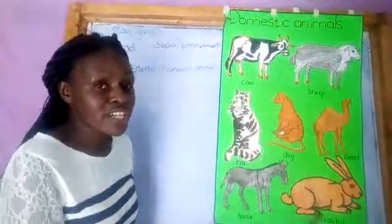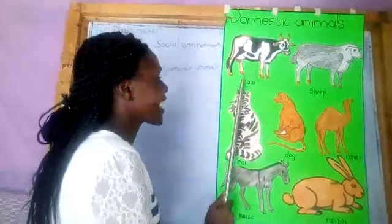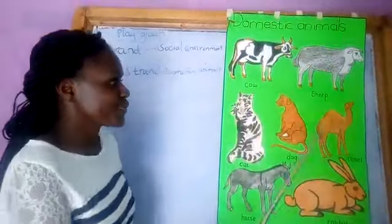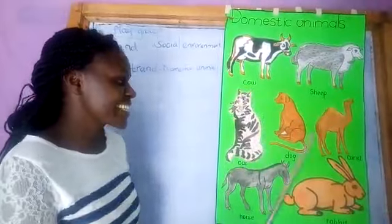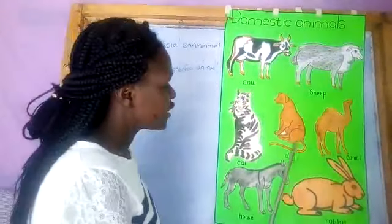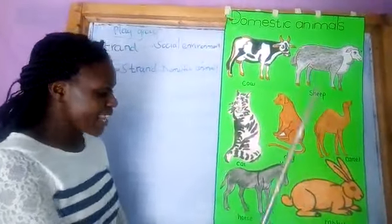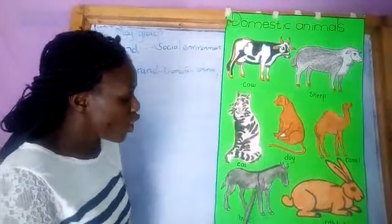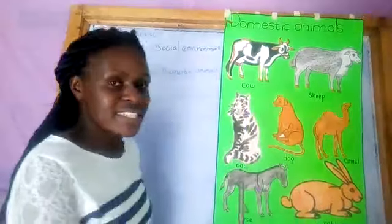So we are going to read together: cow, sheep, cat, dog, camel, horse, rabbit.